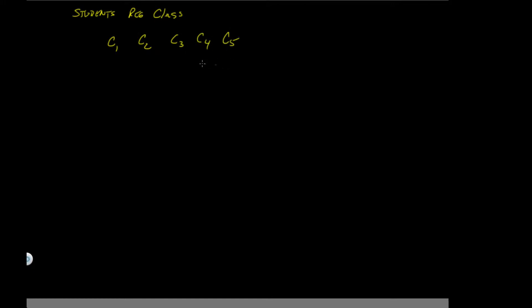We're going to do students registering for classes. We're going to assume there are five classes: C1, C2, C3, C4, and C5. We basically did an observation, and we're going to assume that registration should be even amongst all the classes. But when we actually counted, we had 35 students in C1, 31 in C2, 38 in C3, 27 in C4, and 29 in C5.